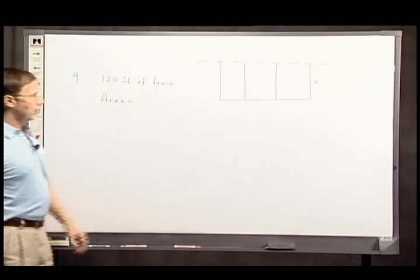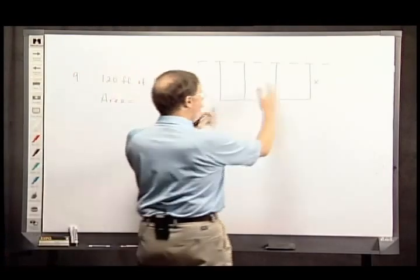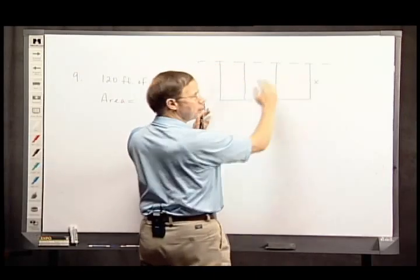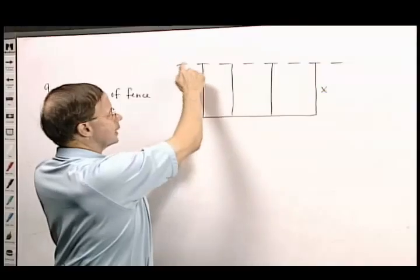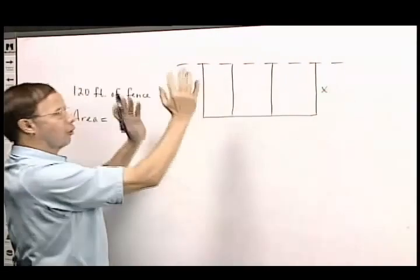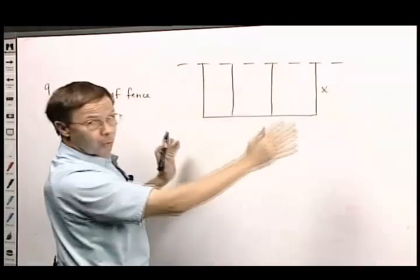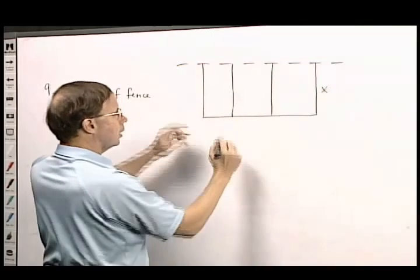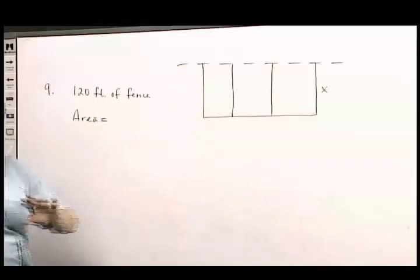What we have here now is a little drawing showing an enclosure, a rectangular enclosure. This dashed line stands for a wall that doesn't require a new fence. These solid lines indicate new fence that's being put in.